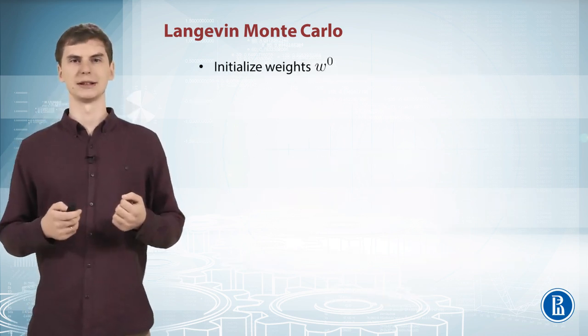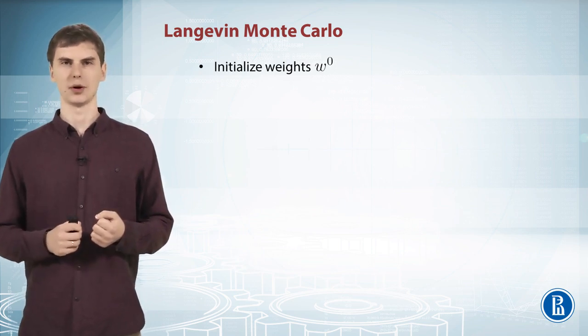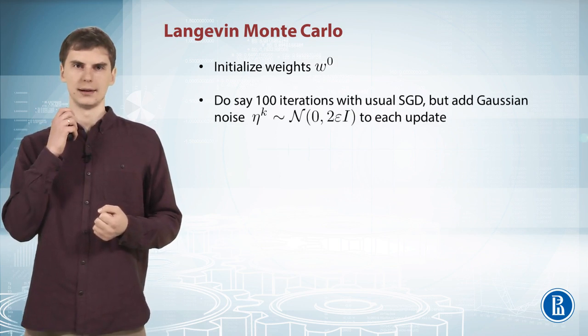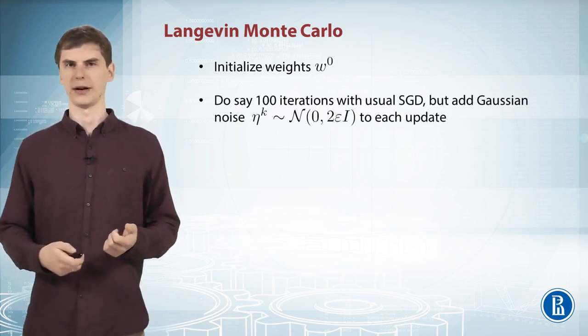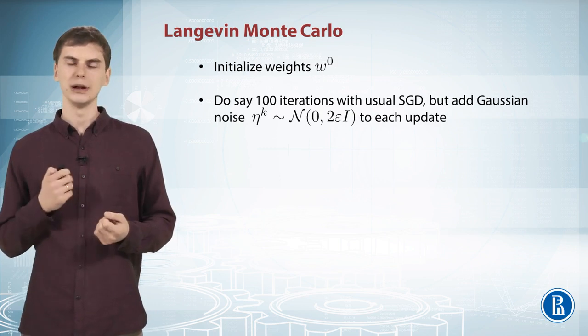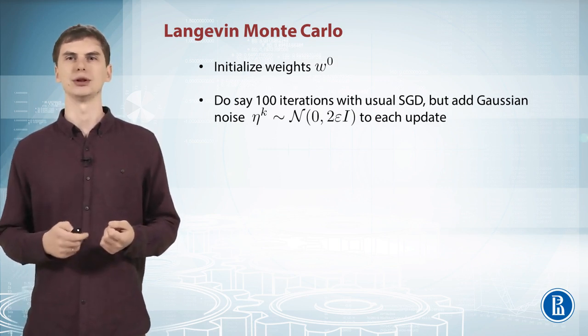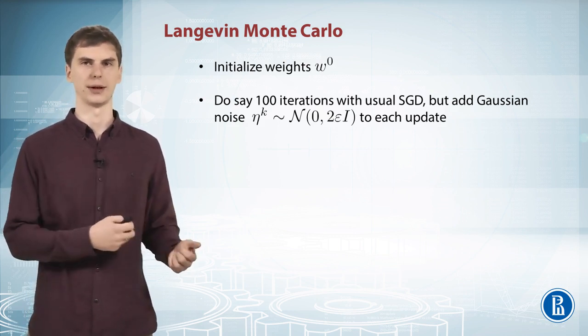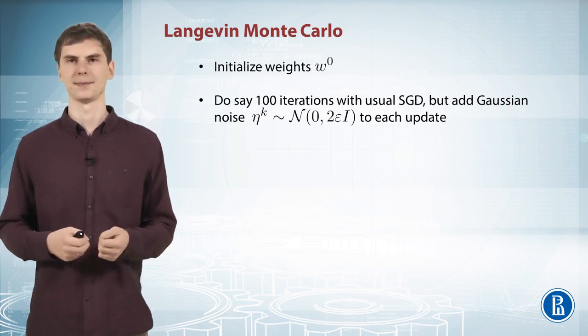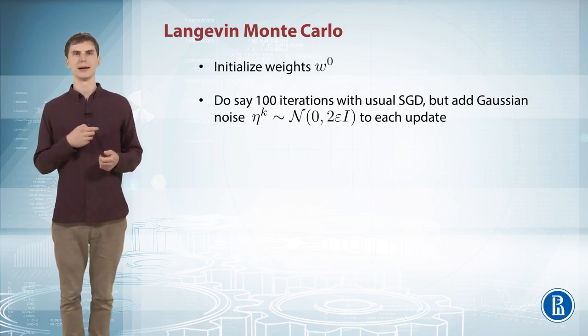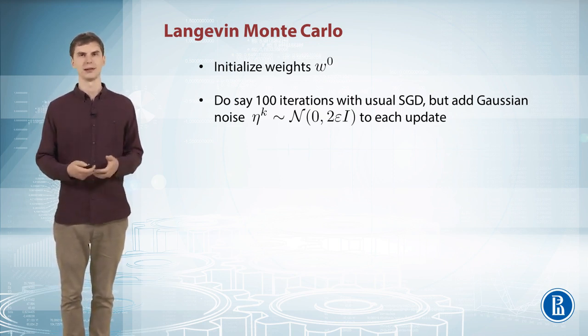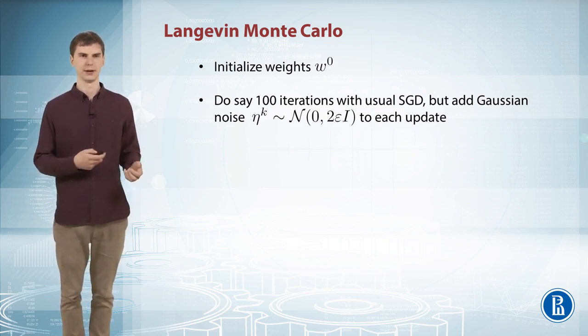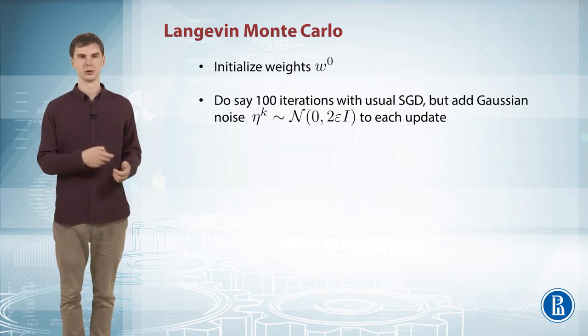So the overall scheme is as follows. We initialize some weights of your neural network. Then we do a few iterations or epochs of your favorite SGD, but on each iteration you add some noise, some Gaussian noise with variance being equal to the learning rate to your update. And notice here also that you can't change learning rate at all at any stage of your sampling or you will also break the properties of this Langevin Monte Carlo idea.